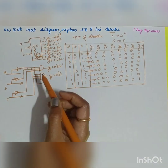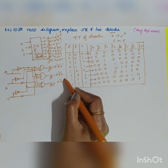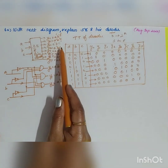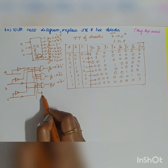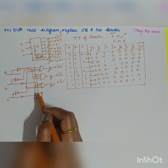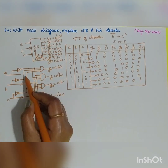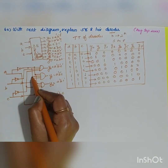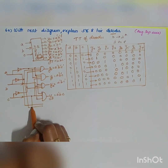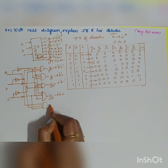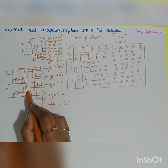For Y3, inputs A', B, and C go into an AND gate giving A'BC. For Y4, inputs A, B', and C' go into an AND gate giving AB'C'. For Y5, A, B', and C give AB'C.